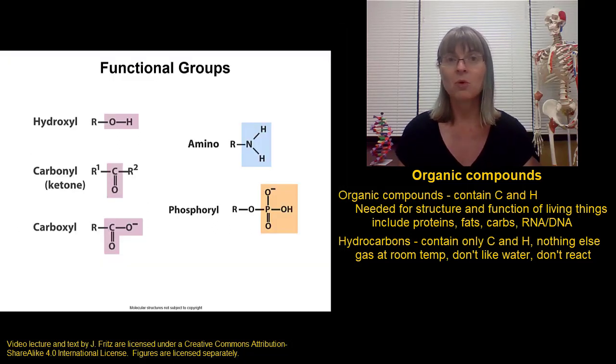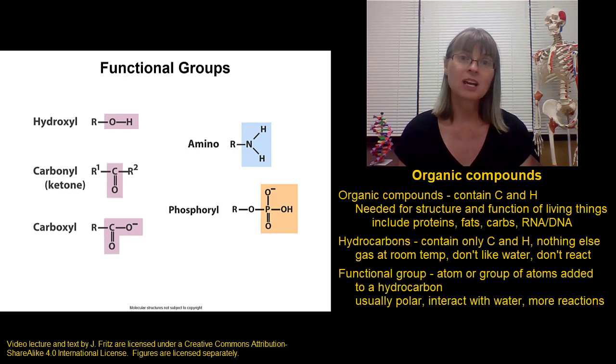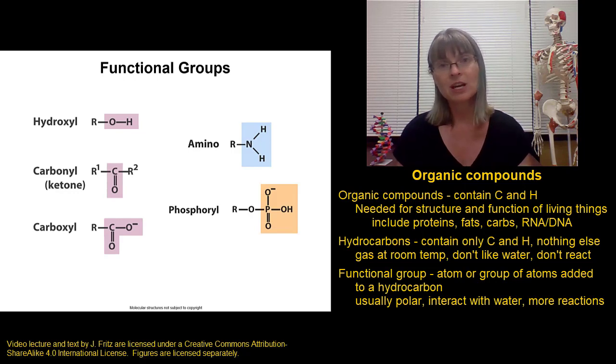In order to be able to make more complex and interesting and reactive molecules that can do things, we have to add something else to these hydrocarbons. And so we can add other types of atoms—nitrogens, phosphorus, oxygen—that will make them more interesting, make them more likely to be liquid or solid at room temperature, and to be able to participate in more reactions. These groups of other types of atoms are called functional groups.